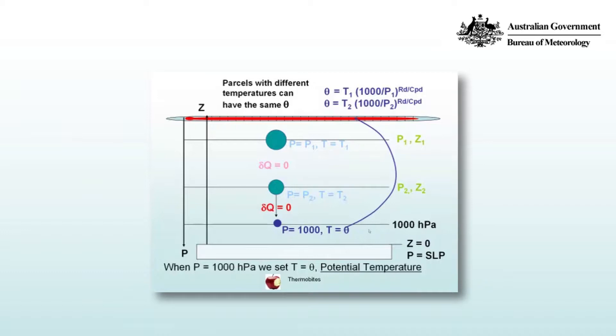Parcels with different pressures can have the same potential temperature. A parcel descending from P₁ to P₂ to 1000 hPa warms at each level from T₁ to T₂ to theta. A different parcel starting at P₂ with temperature T₂ ascending to 1000 hPa will have the same potential temperature as the parcel that started at P₁ with T₁. Parcels with different temperatures can have the same potential temperature, which serves as a label for parcels undergoing dry adiabatic motion.